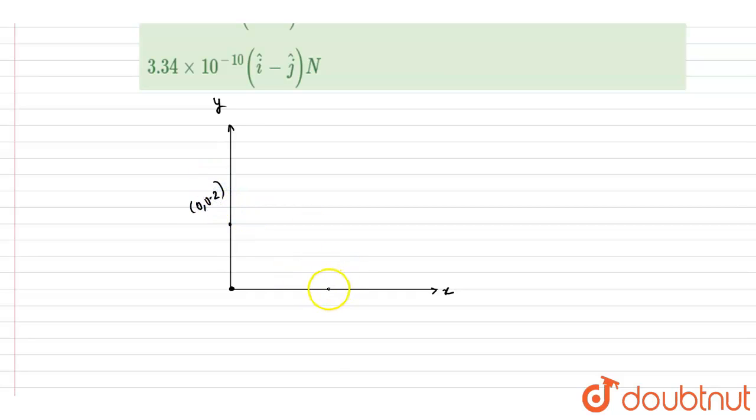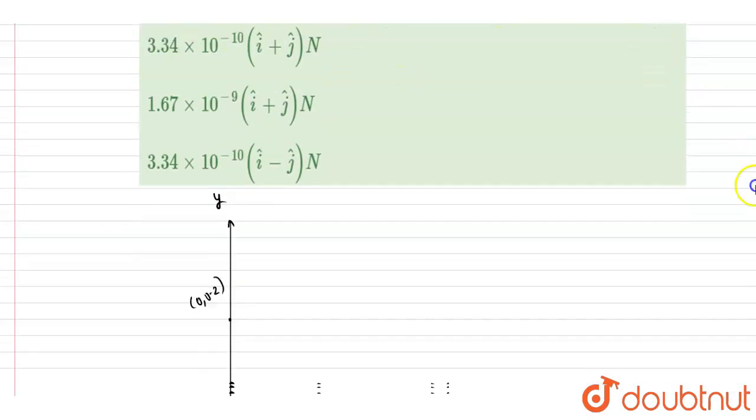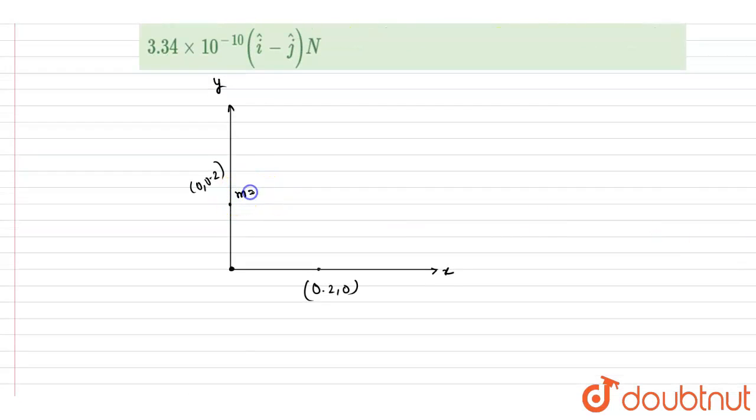So if you see, the masses are 1, 1, and 1 kg. So if you see here, the gravitational attraction will be toward each other. So we want the net force on the mass kept at the origin, so it will experience two gravitational attractions by the two masses.